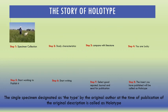Now here is the story of the holotype. The simple definition: a holotype is the single specimen designated as the type by the original author at the time of publication of the original description.